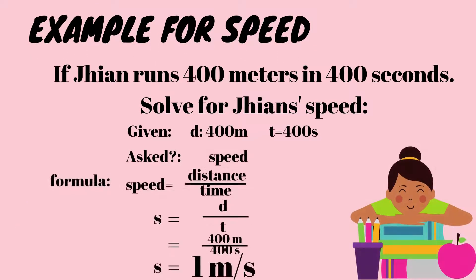Let us have an example of how we are going to solve for speed. If Jian runs 400 meters in 400 seconds, solve for Jian's speed. First, you have to find the given: distance is 400 meters, time is 400 seconds. What is asked? Speed.